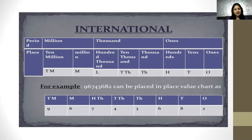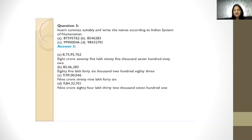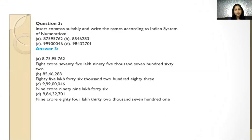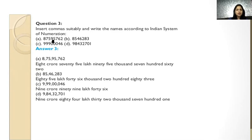Have you seen the difference between the Indian and International place value charts? In the Indian place value chart there are two places in each period after the ones, but in the International system there are three places in each period. Now, it is very difficult to read a large number without commas, so commas help us to read and write the number very easily.